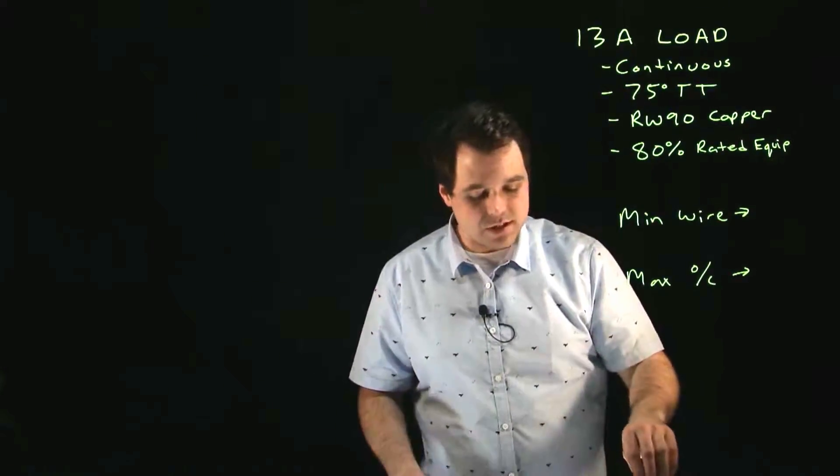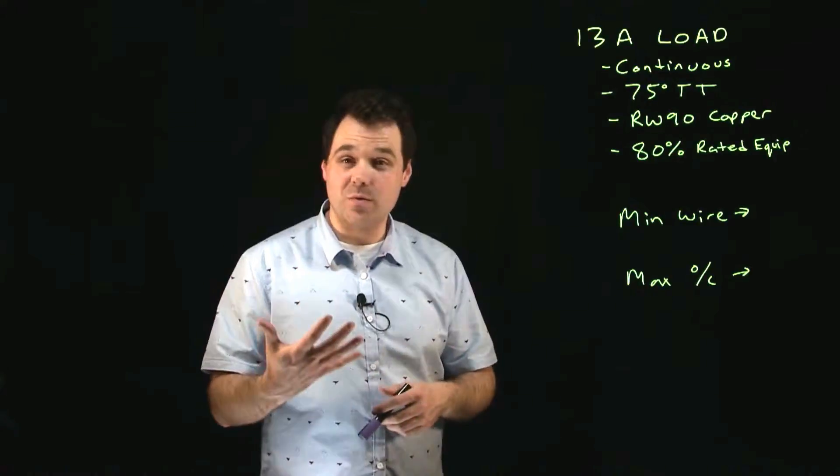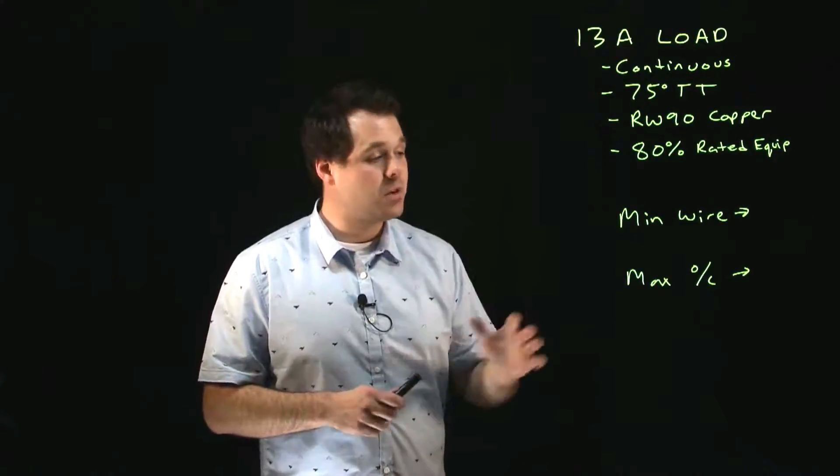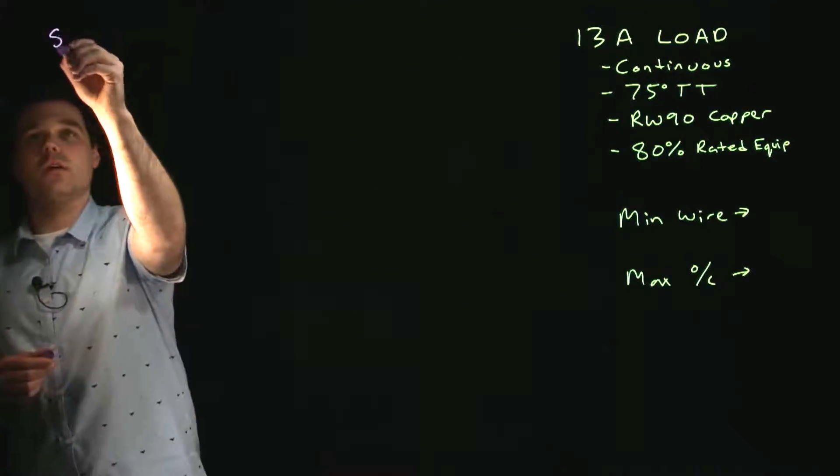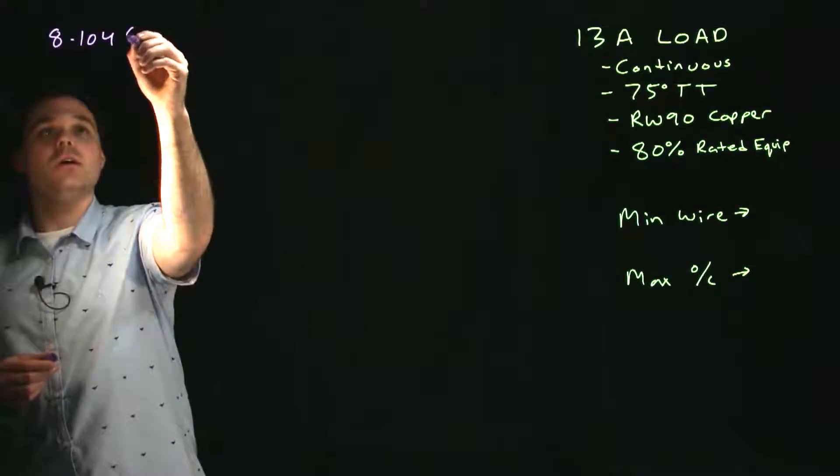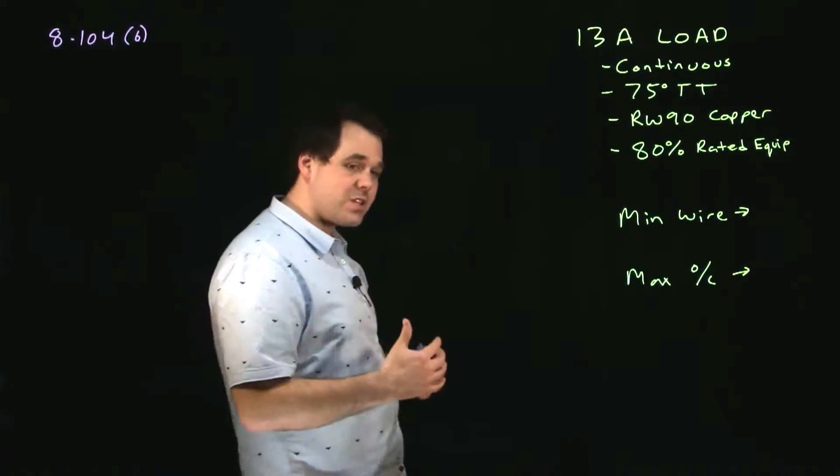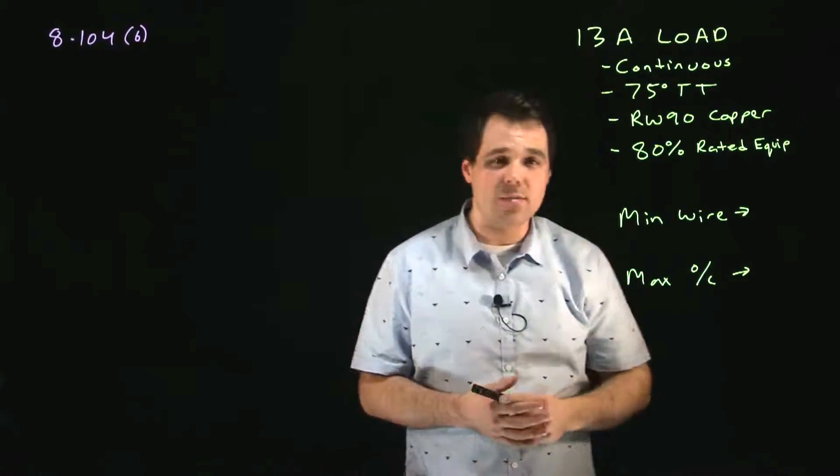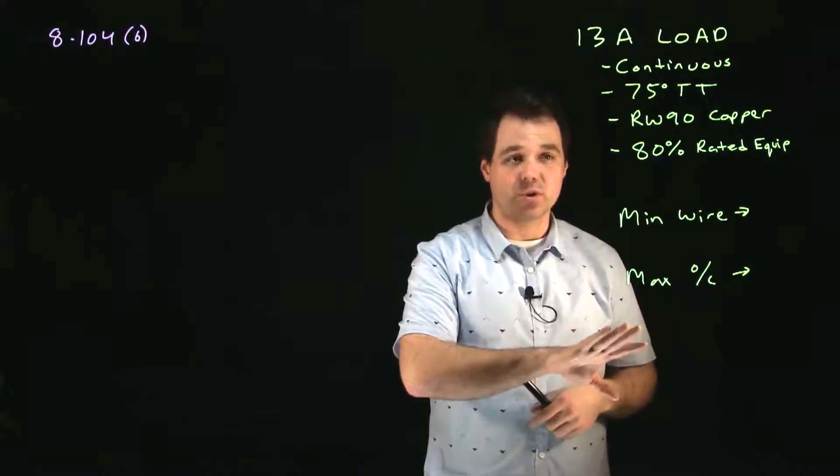So because this is a continuous load we are going to be referencing section 8 circuit loading 8-104. Specifically because we're using 80 percent rated equipment we are going to be using 8-104 sub rule 6. Now 8-104 sub rule 6 is where you're using 80 percent rated equipment. Your load cannot exceed 80 percent the rating of the circuit breaker.